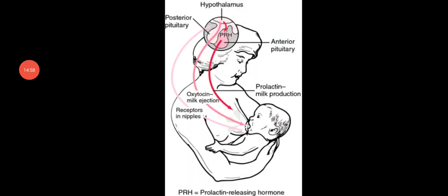Next we will see the topic of lactation. Lactation is the production of milk by the mammary glands. We have already seen the structure of the mammary gland and its main function is to secrete milk.